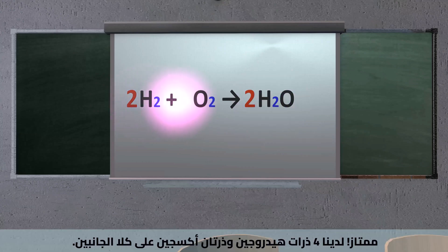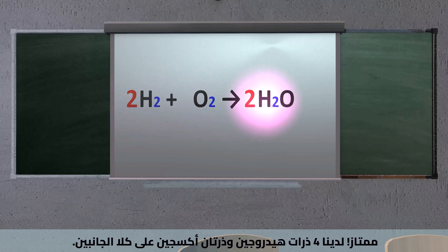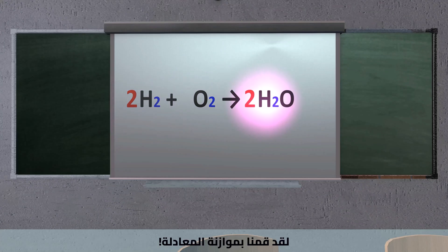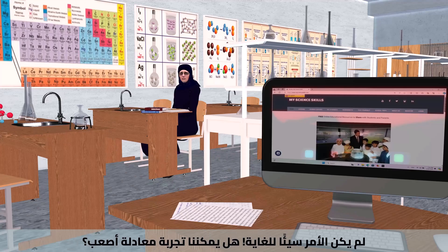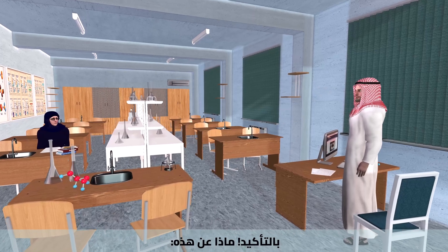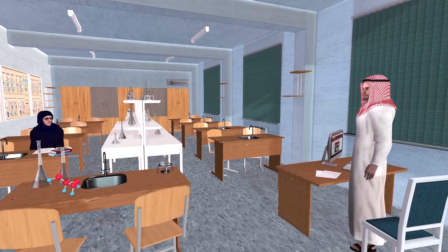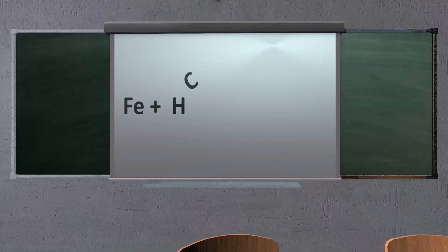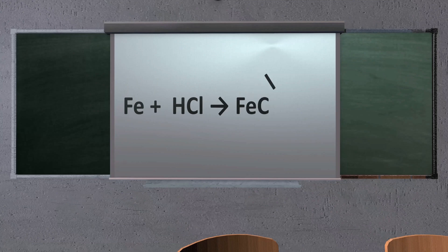We have four hydrogens on both sides — the equation is balanced. That wasn't so bad. Can we try a harder one? Sure, how about this: Fe plus HCl produces FeCl₂ plus H₂.